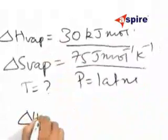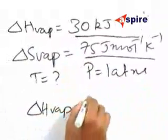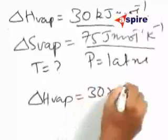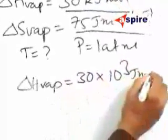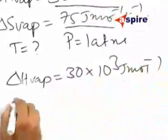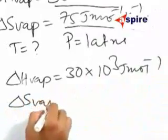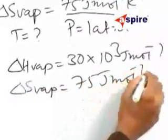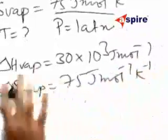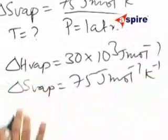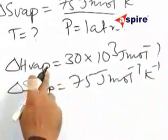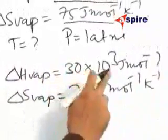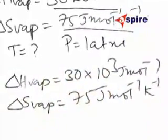So delta H vaporization will be equal to 30 into 10 cube joules per mole, and delta S vaporization will be 75 joules per mole per Kelvin. You are not changing anything with respect to delta S vaporization. With delta H vaporization, conversion of kilojoule to joule is being done.